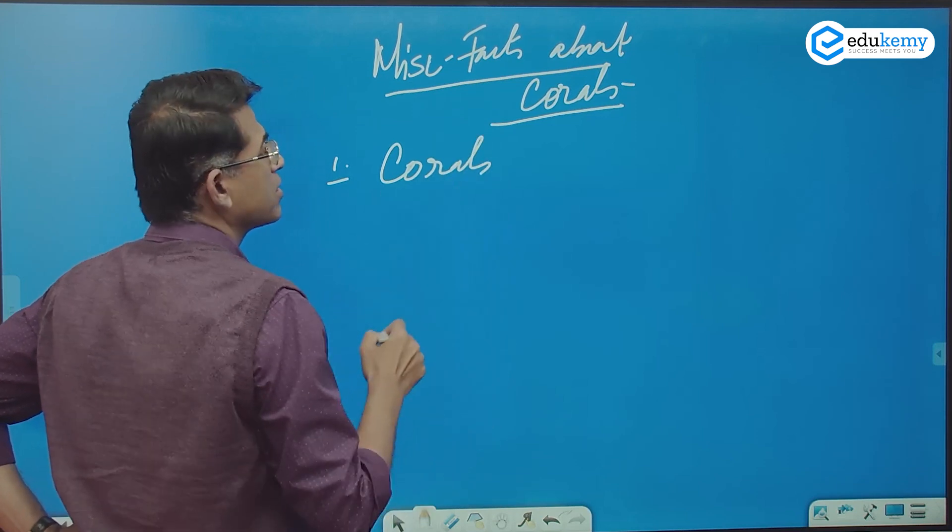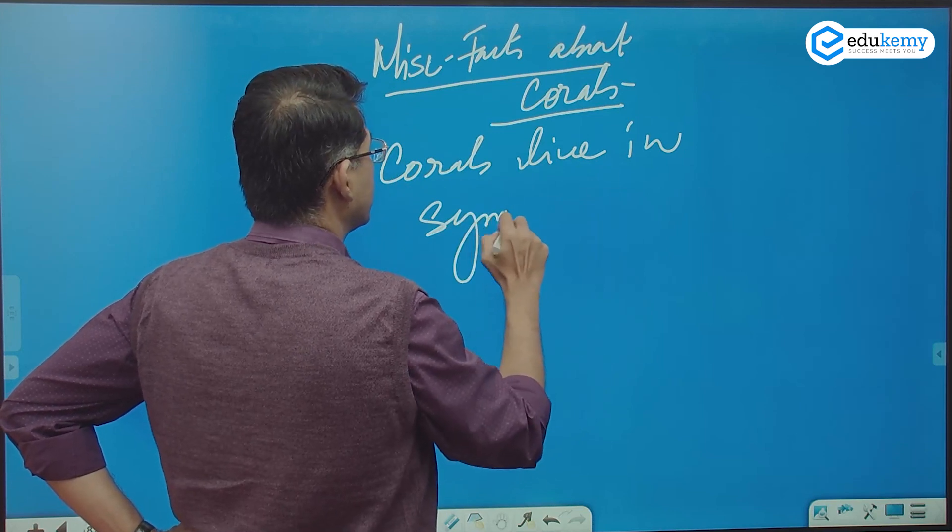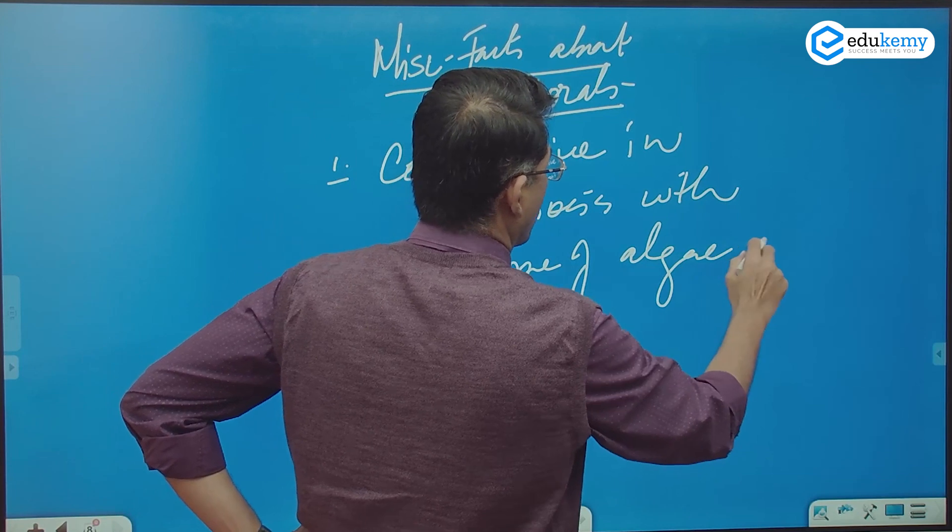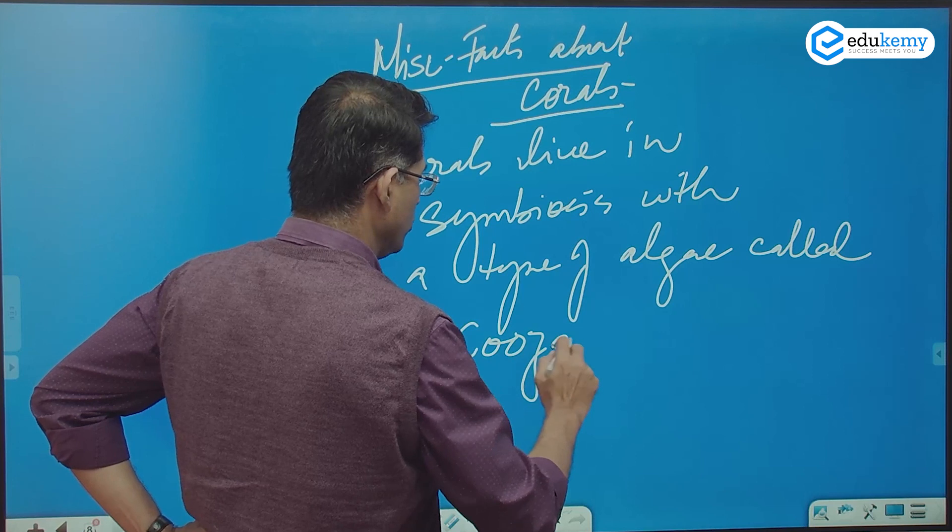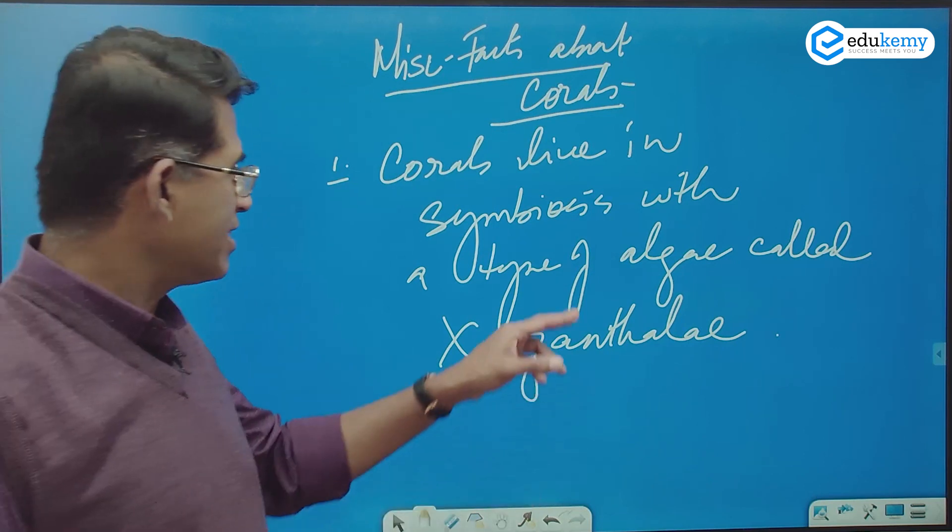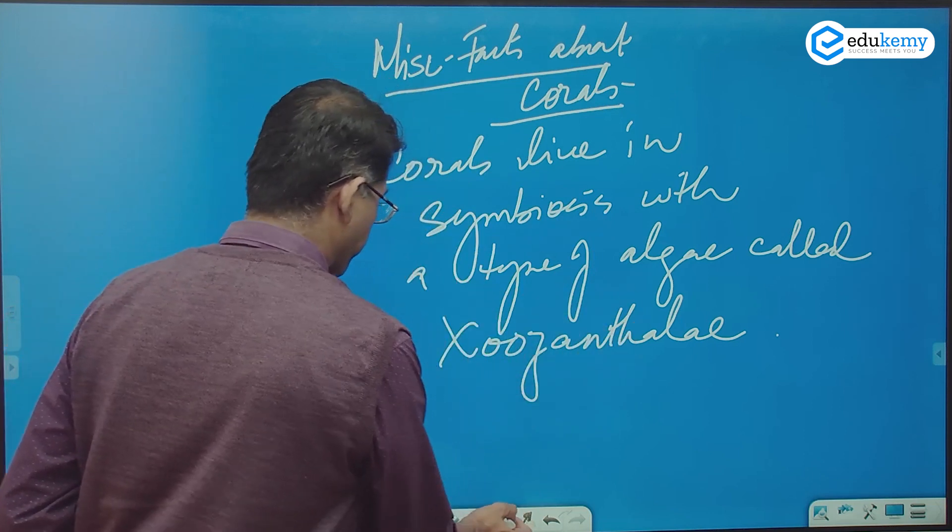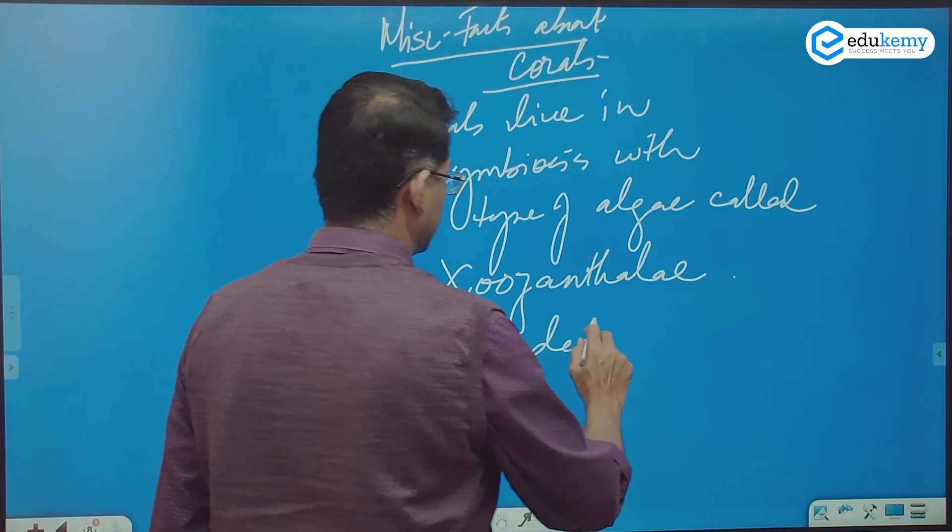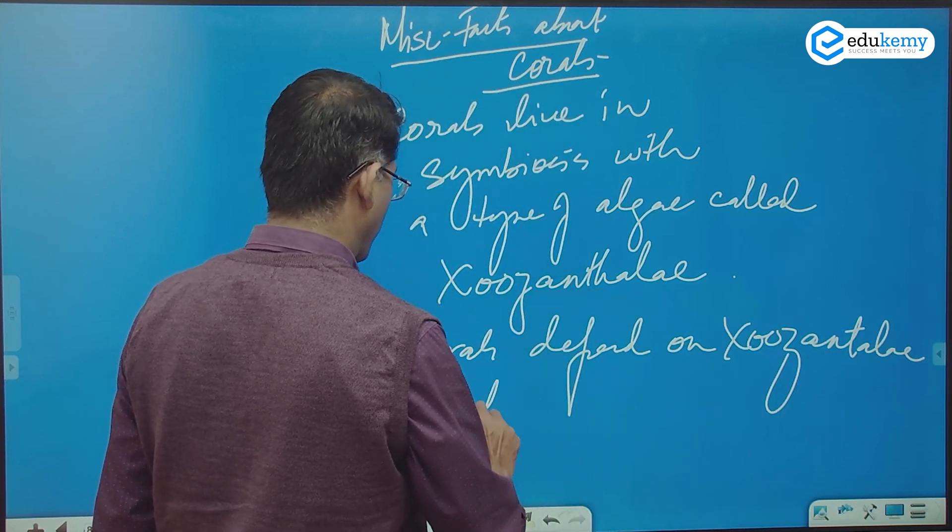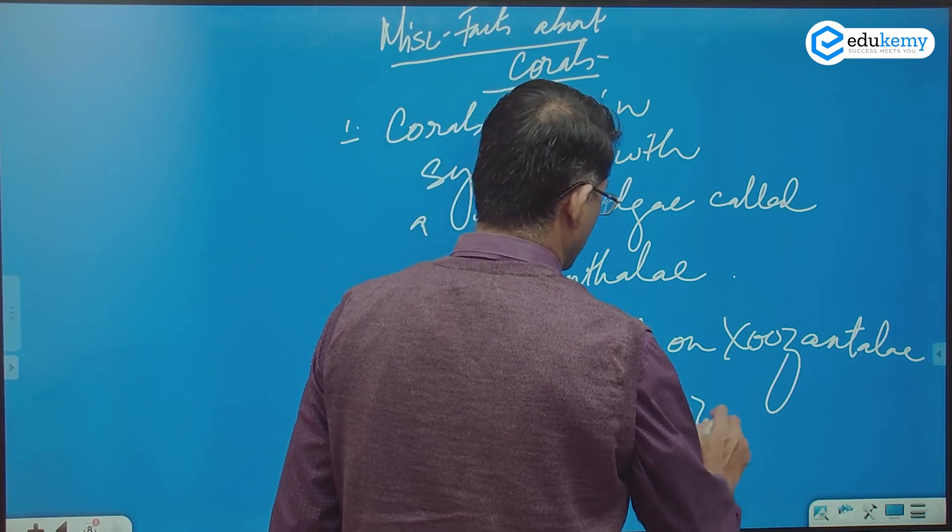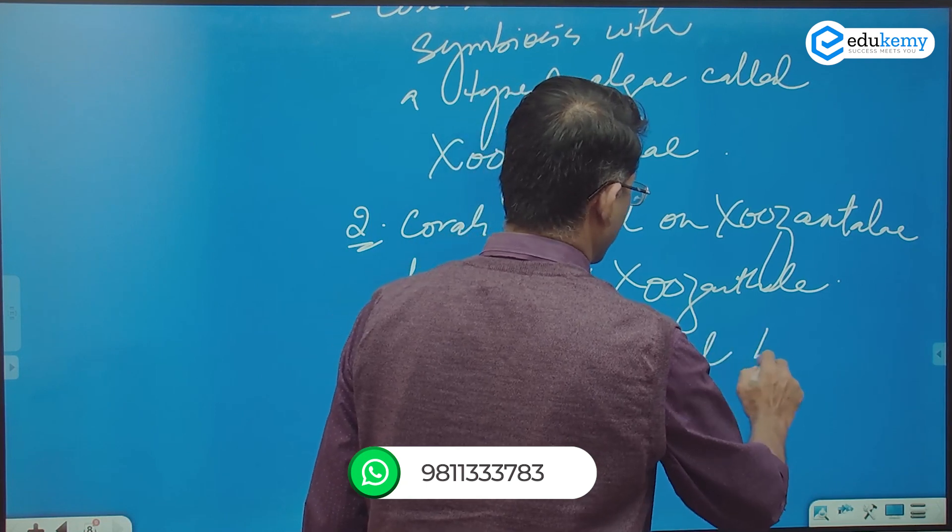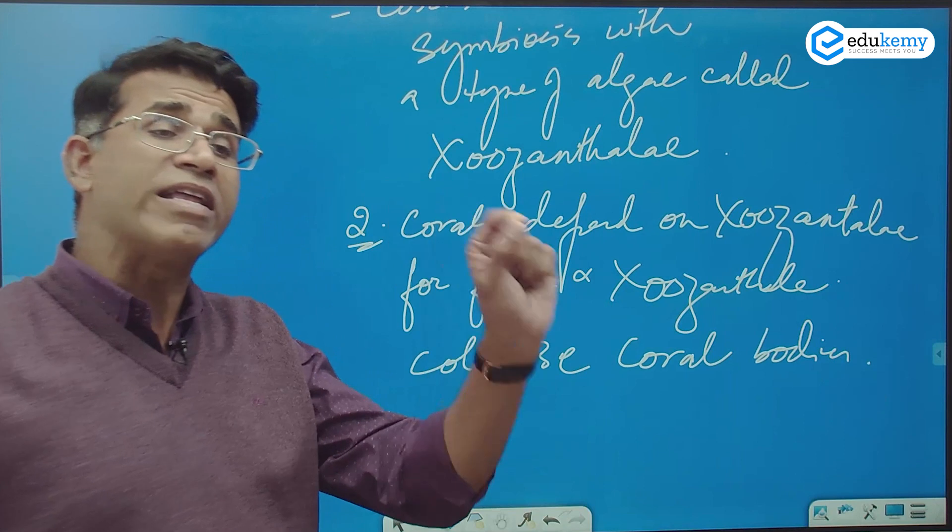Corals live in symbiosis with a type of algae called zooxanthellae. Algae is something like plants. Corals depend on zooxanthellae for food, and zooxanthellae colonize coral body. They live in the body of the corals.